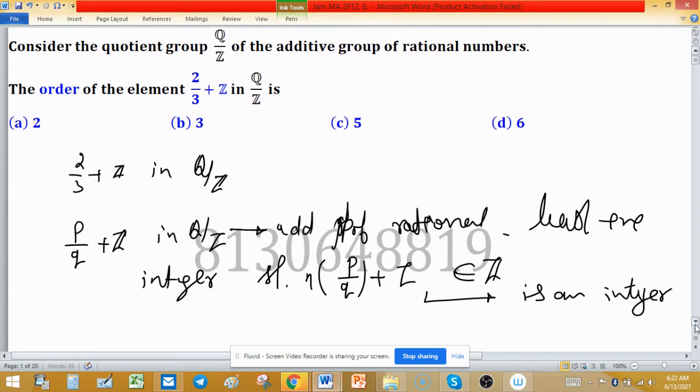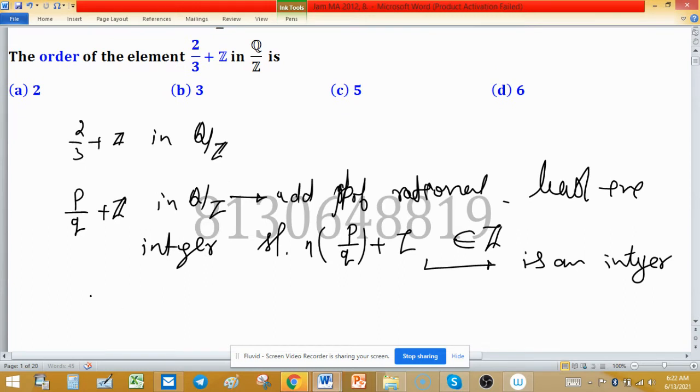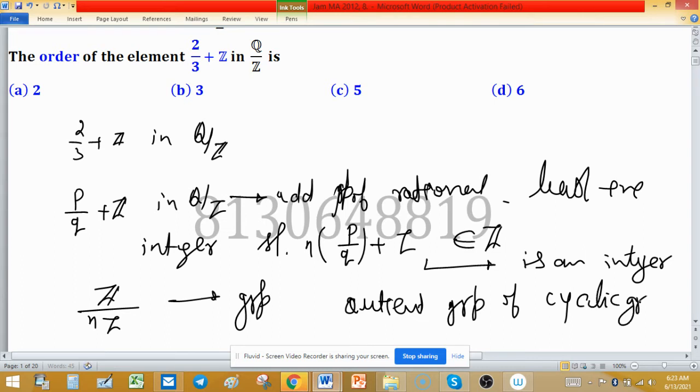Second thing we have to recall: Z over nZ. This is also a group, and normally we know quotient group of cyclic - cyclic quotient group of cyclic group is cyclic.